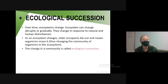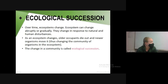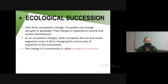Climate change is happening super slowly, but it's affecting all of the ecosystems all over the earth. As an ecosystem changes, older occupants die out and newer organisms move in, thus changing the community of organisms in the ecosystem. As something goes extinct or can't live there anymore, something else will move in. This change in the community is called ecological succession.